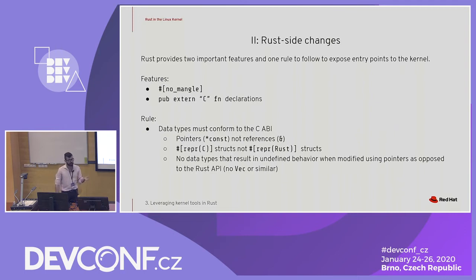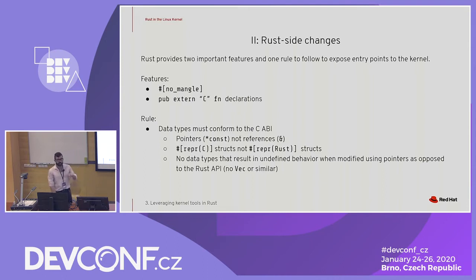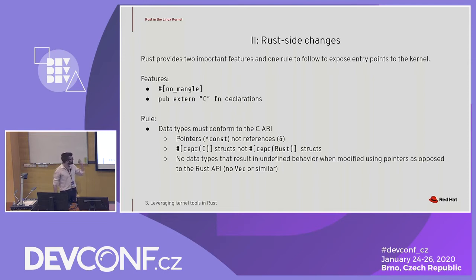On the Rust side, we'll have to make two specific important changes. One is an attribute we attach to functions for entry points: no_mangle. The other is declaring them as compatible with the C ABI as extern functions. The overall rule is that we should keep everything compatible with the C ABI — for example, using pointers instead of references and similar C ABI compatible data types that map directly to Rust data types but have a little bit less information encoded.